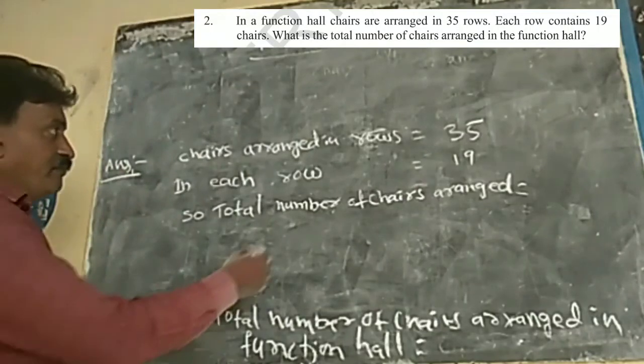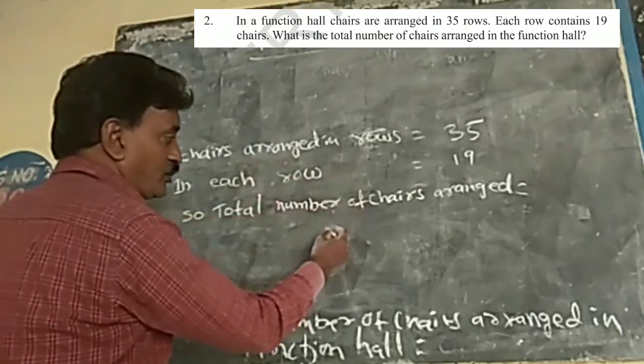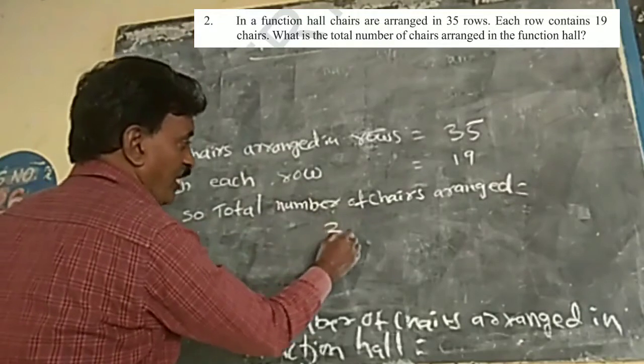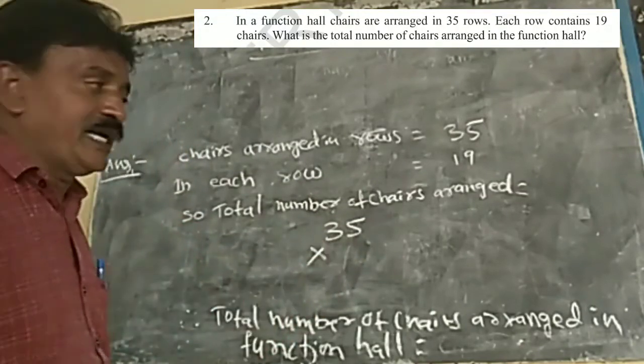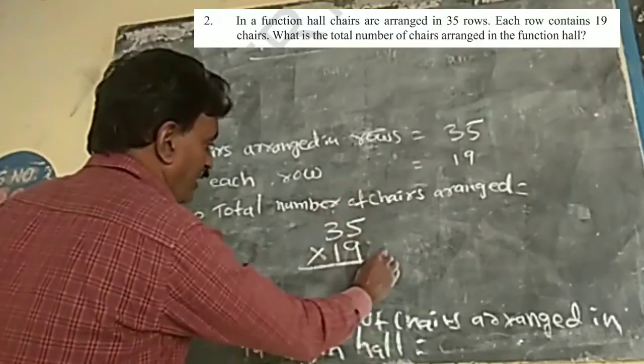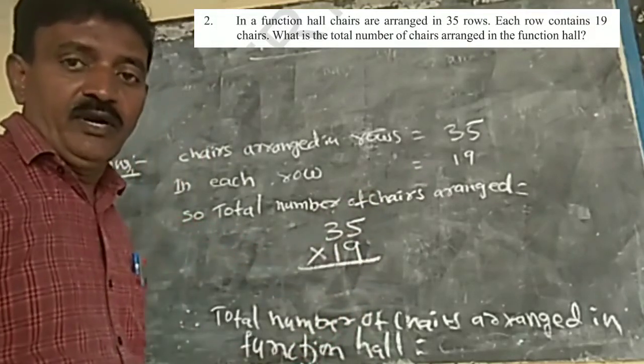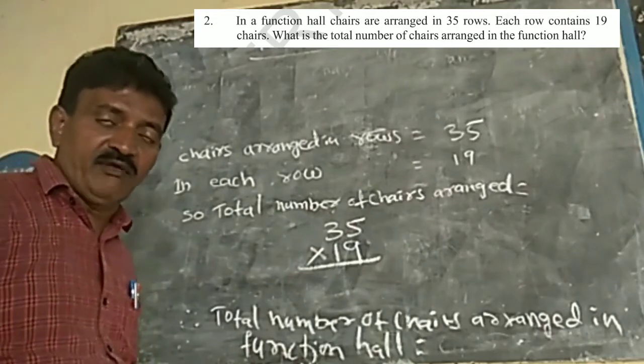So first you write, chairs arranged in rows, how many rows? 35 rows. There are 35 rows. You need to know how many chairs? 19. So we can multiply 35 into 19. That is called 35 by 19.